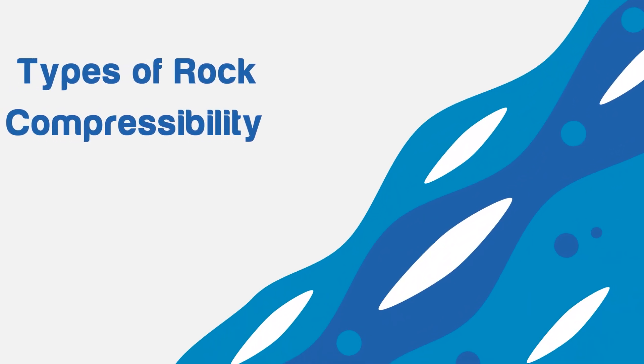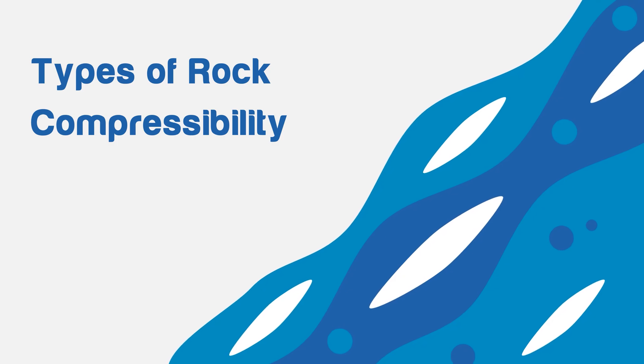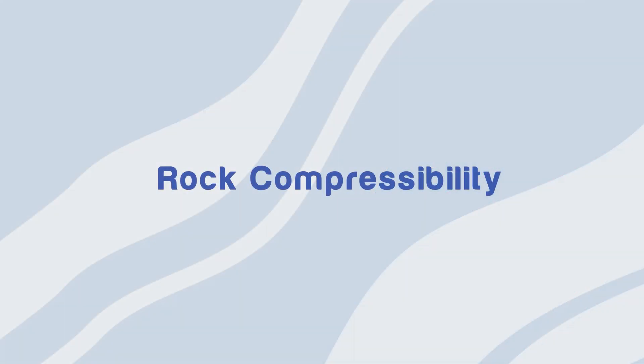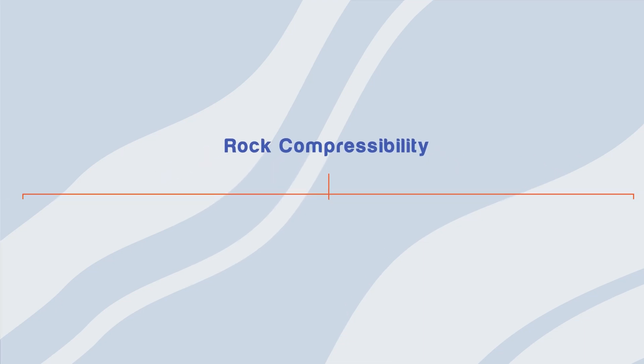Hello, in this video we will discuss the different types of rock compressibility. Rock compressibility is divided into three major types: matrix, bulk, and pore.